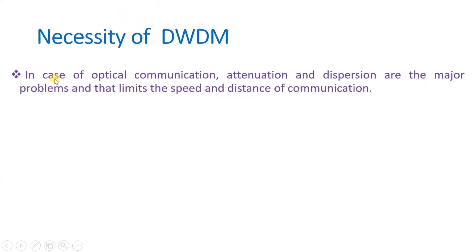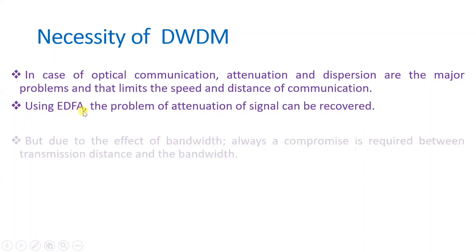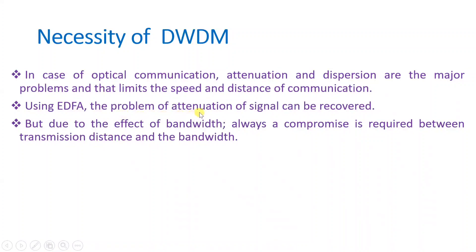Now let us see the necessity of DWDM network. In optical communication, the major issues are attenuation and dispersion. These two issues result in limitations of speed and distance of communication. By using EDFA, we can resolve the issue of attenuation by providing amplification. EDFA — Erbium-Doped Fiber Amplifier — functions at 1550 nanometer wavelength to amplify signal and increase distance of communication.